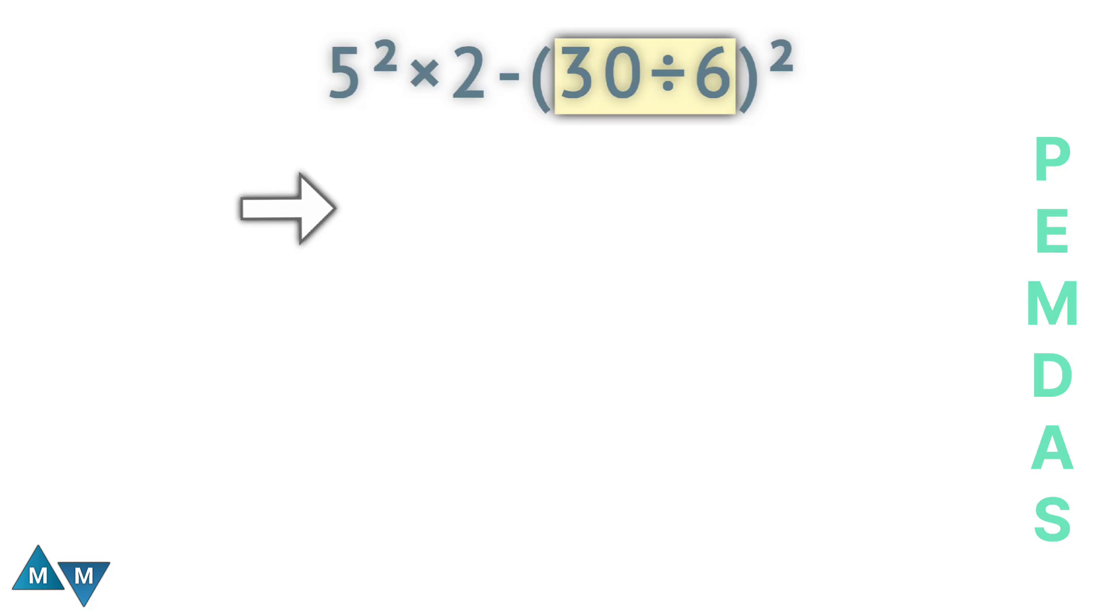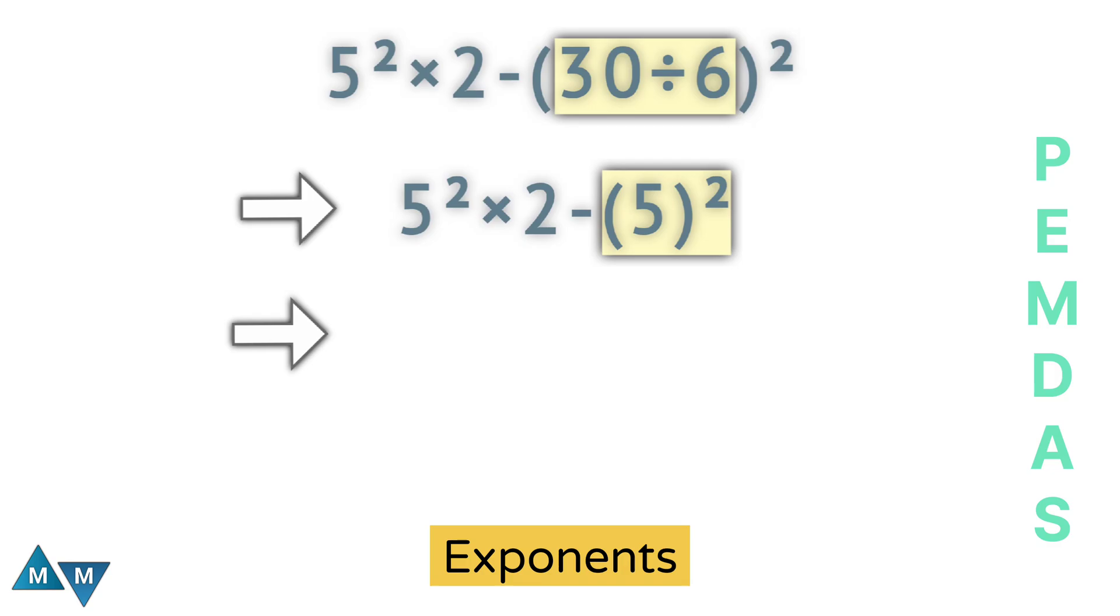Now we have 5 square times 2 minus 5 square. Now, following the PEMDAS rule, our next step is to solve the exponents. So 5 square can be written as 25, and this 5 square will also give 25.